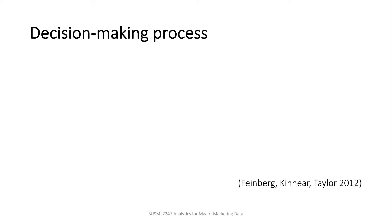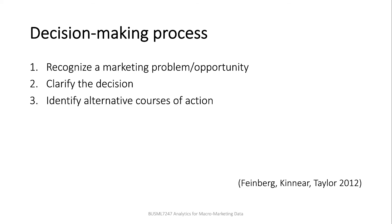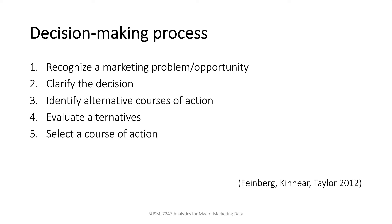A decision is generally made through the following steps. First, managers recognize what is a problem to solve or an opportunity to take — in the A-B test example, the online store had a need for replacement of a website. Second, managers clarify what to decide — the manager wanted to go for the design that yields the highest conversion rate. Third, managers identify which actions are available — the manager had two versions from the design company. Fourth, managers evaluate each of the possible options — the manager conducted an experiment to evaluate them. Then, managers select one of the actions based on the evaluation — the manager finally decided version B as the new website because it yields a higher conversion rate.